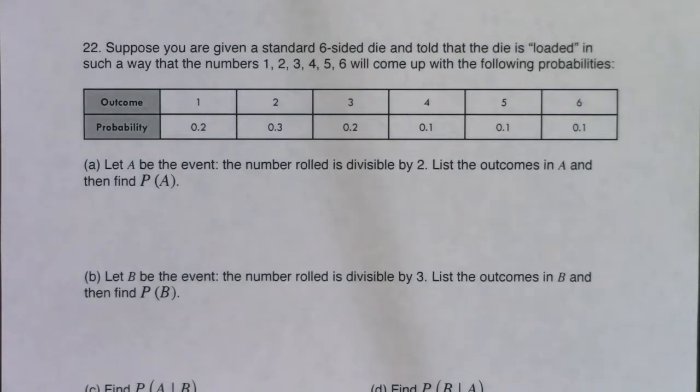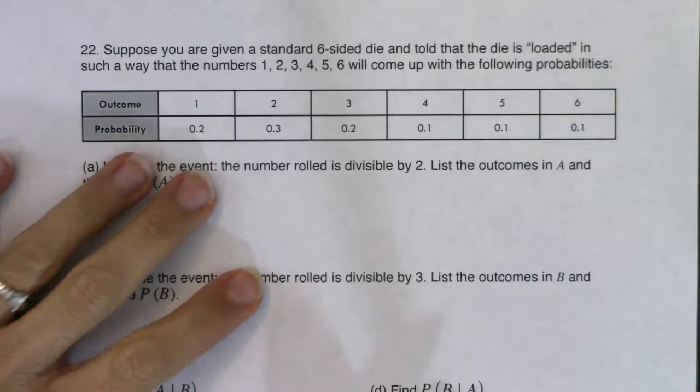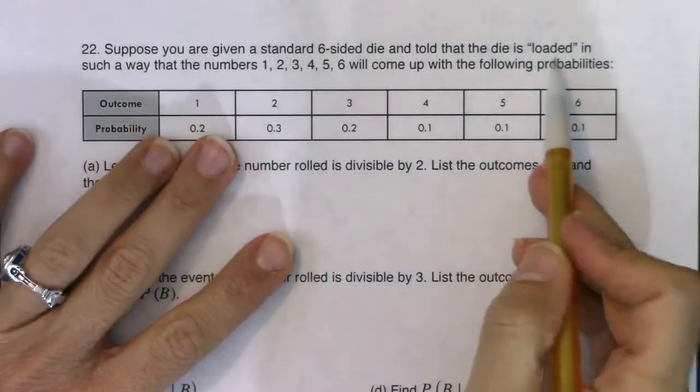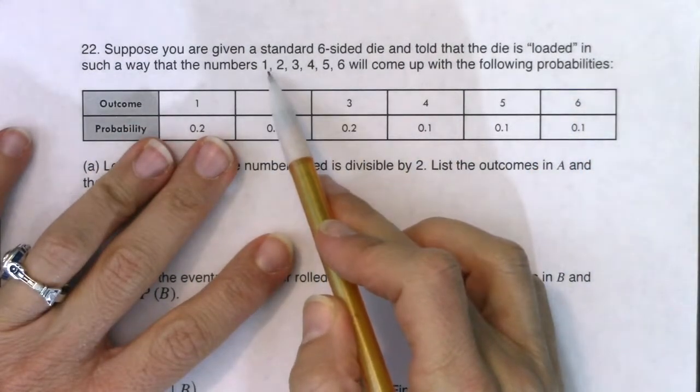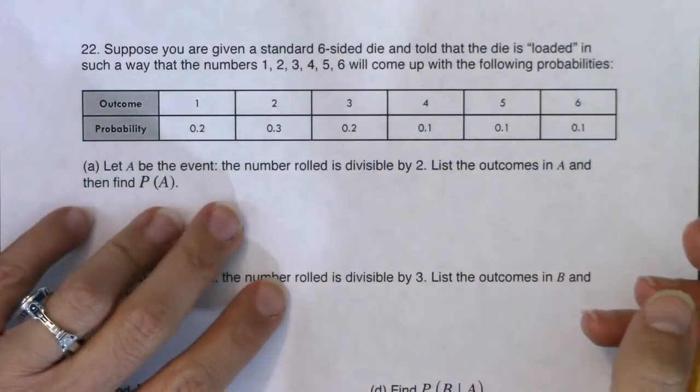All right, gang, last problem in this packet. Suppose that you are given a standard six-sided die and told that the die is loaded in such a way that the numbers 1, 2, 3, 4, 5, 6 will come up with the following probabilities.